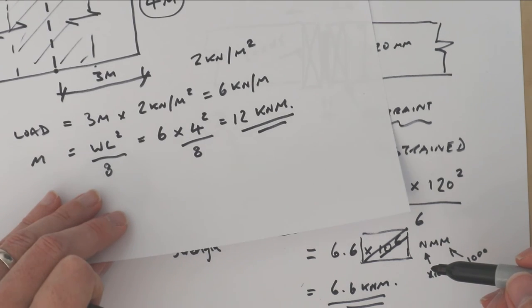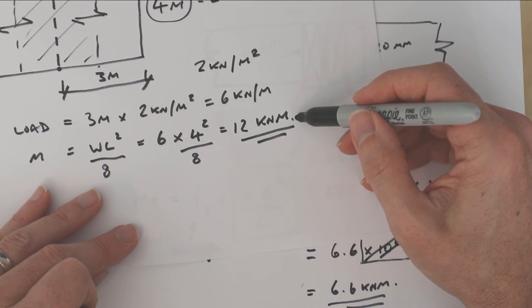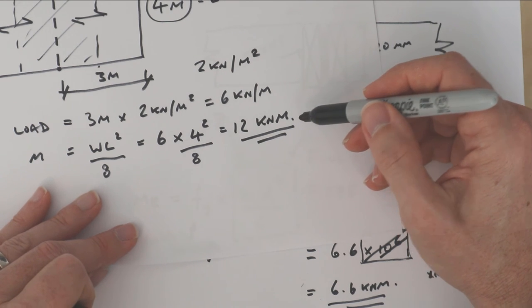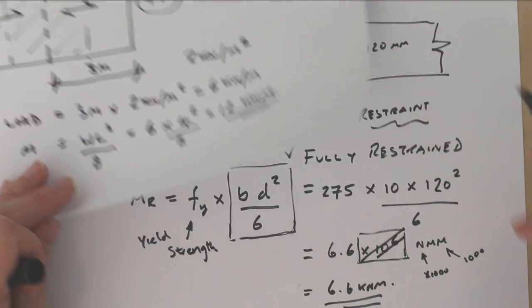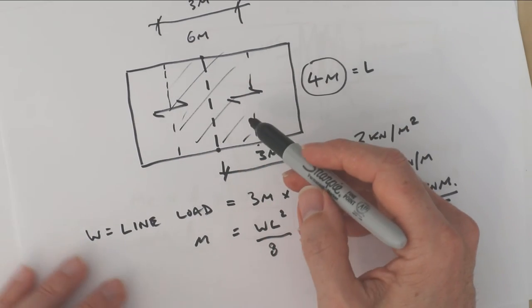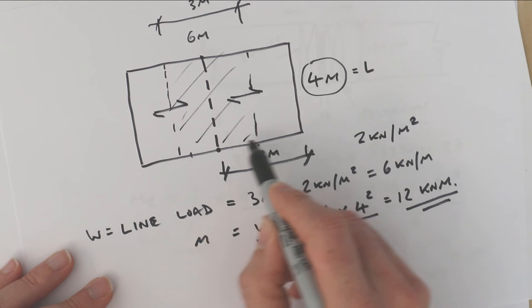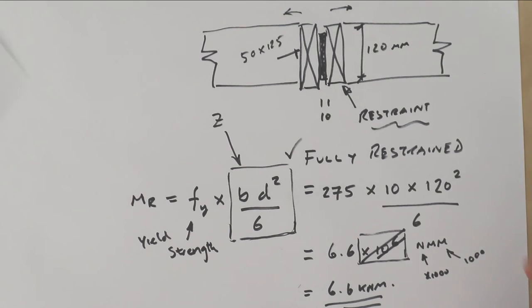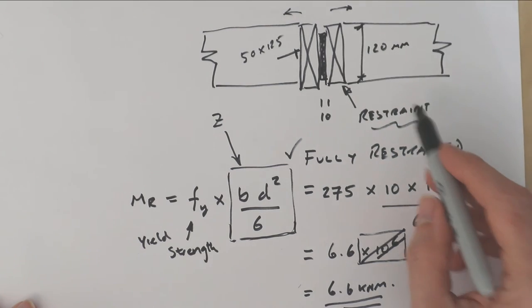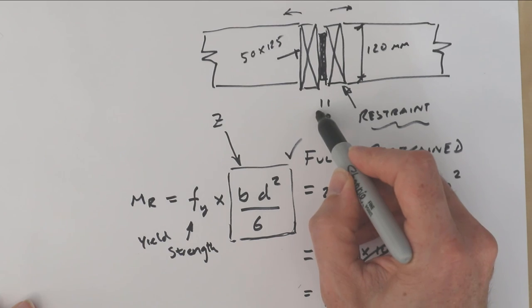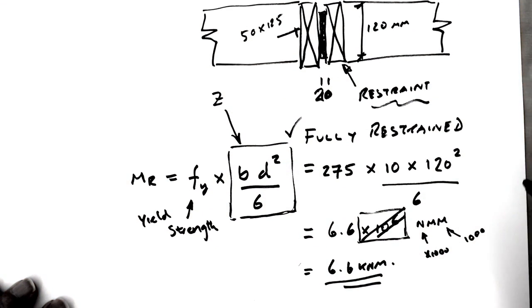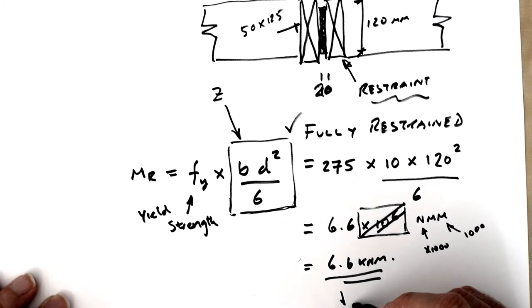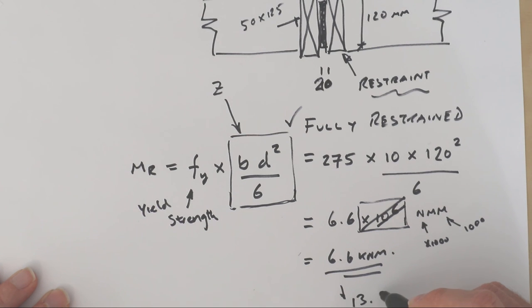As we can see, it's actually half the strength that we wanted it to be—we wanted it to be 12. So the easy solution here is to put two in at third points rather than one just right in the middle, or we could double up the amount of steel and make that 20, which would double that value to 13.2 kilonewton meters. So that's how to design a flitch beam.